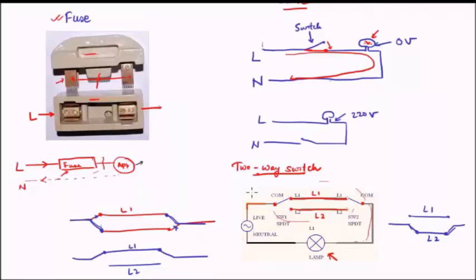As you can see, the two-way switch is a very nice idea to implement, especially in cases like a staircase. Suppose you have a bulb at the staircase to your terrace and you would like to switch it on and off both from the ground floor and from the terrace — that is one of the places where the two-way switch comes in handy. This gives you an idea about the two-way switch.